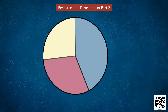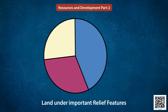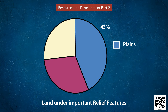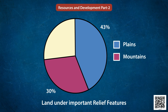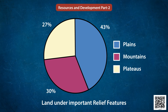This diagram represents the land under important relief features. About 43% of the land area is plain, 30% of the total land surface area is under mountains, and 27% area is under plateaus.